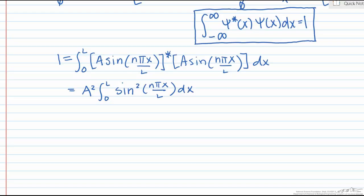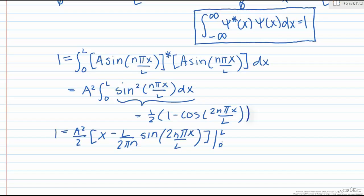To make this a little bit easier, we can use a trig identity, as shown here. And after making this substitution and evaluating our integral from 0 to L, we're left with the simplified form 1 = A²/2 × L. So if we solve for A, we find that A = √(2/L).